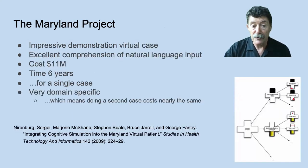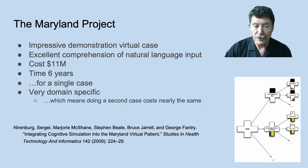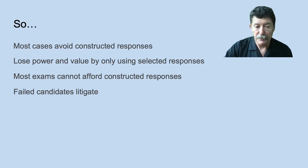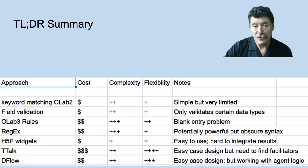It can also be very expensive to do well if you're trying to automate it. The Maryland Project was a very interesting example of this, where they developed a very capable natural language virtual scenario, but it cost a huge amount and took a lot of time. So most cases tend to avoid constructive responses — they have lots of power, but they are expensive with lots of downsides. Our TLDR summaries are there for you to peruse at your leisure.